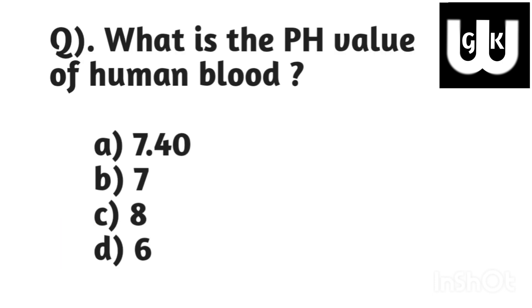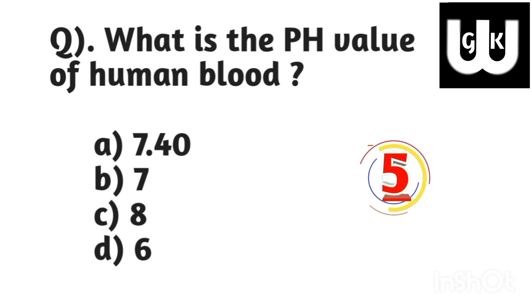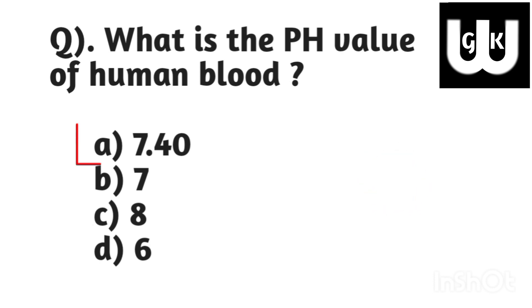Next question: what is the pH value of human blood? Answer: 7.40.